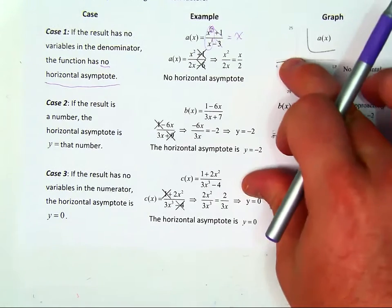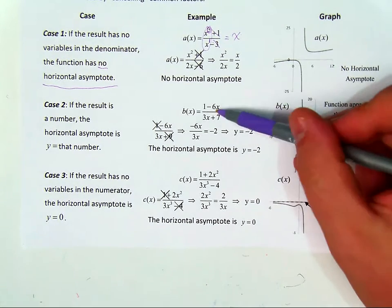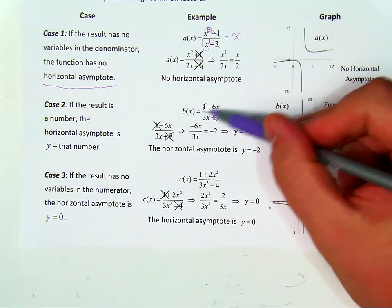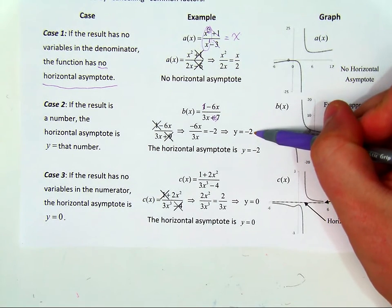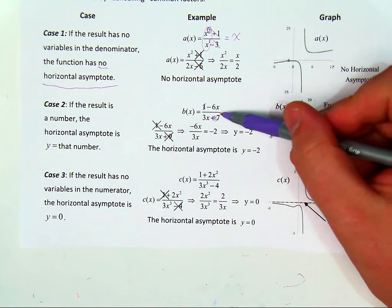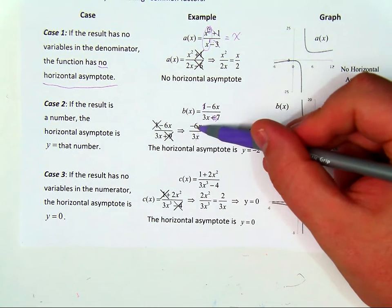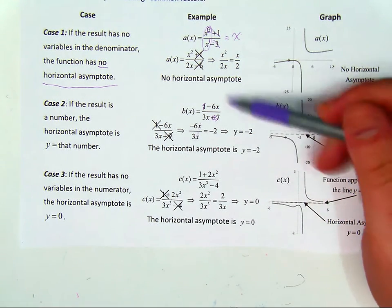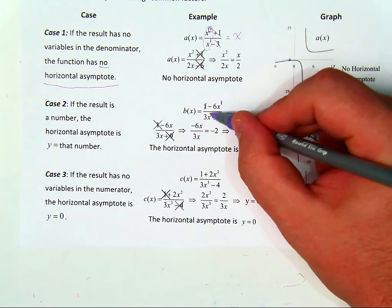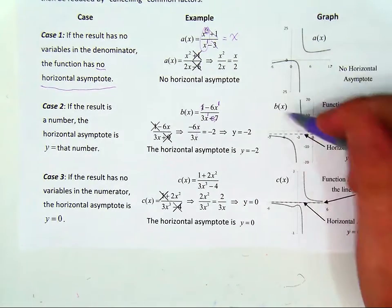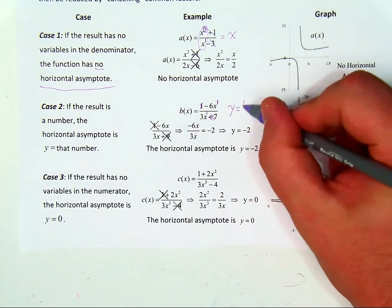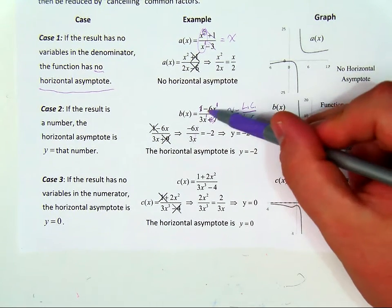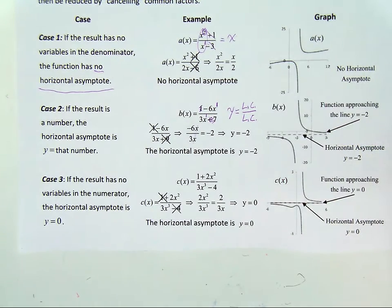In the second case, what if I plugged in large numbers for x? Well, the constants plus 1 and plus 7 would not matter. If I simplified this I'd get y equals negative 2. So as I plug in very large numbers for x, the x's cancel each other out and what takes over is negative 6 over 3, which is y equals negative 2. So anytime you have a rational function where the degrees are the same, the horizontal asymptote is always going to be y equals the leading coefficient of the numerator divided by the leading coefficient of the denominator — in this case, y equals negative 2.